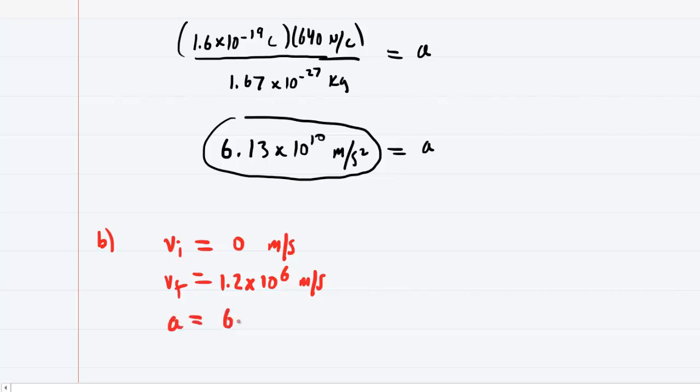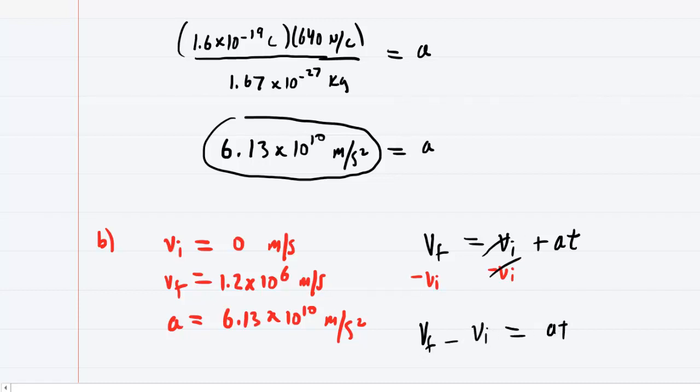We have the acceleration from part A, and now we're simply going to calculate the time. There's a nice equation from kinematics. We recall that the final velocity equals the initial velocity plus acceleration times time. Let's solve this for time. We can subtract the initial velocity from both sides, so then we have VF minus V initial equals AT. And then we'll divide both sides by the acceleration, and this gives us the expression that we seek for time.